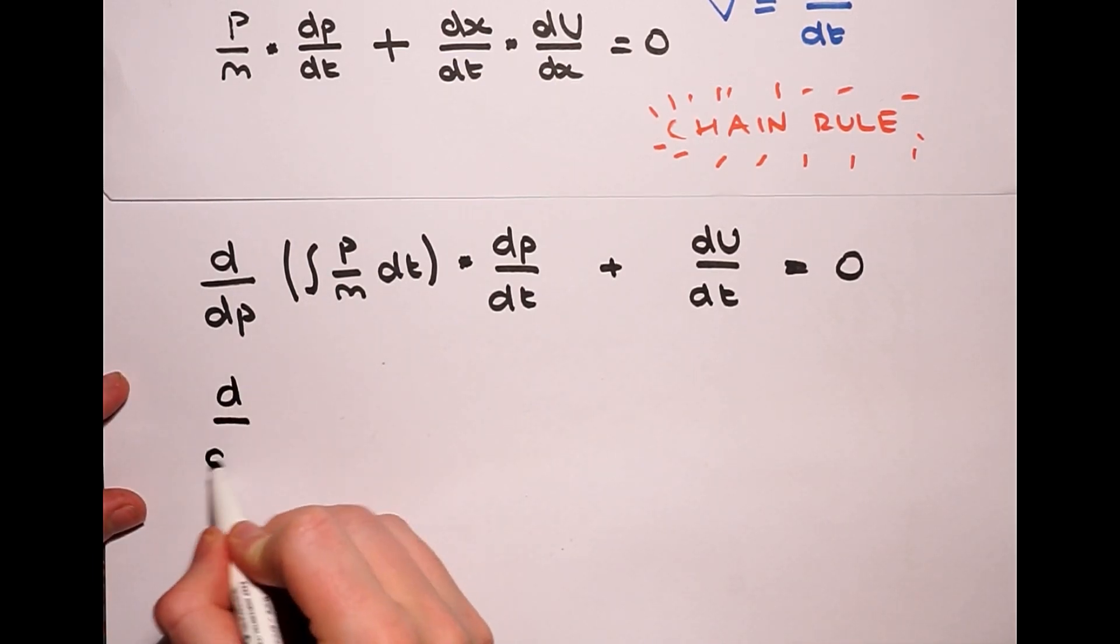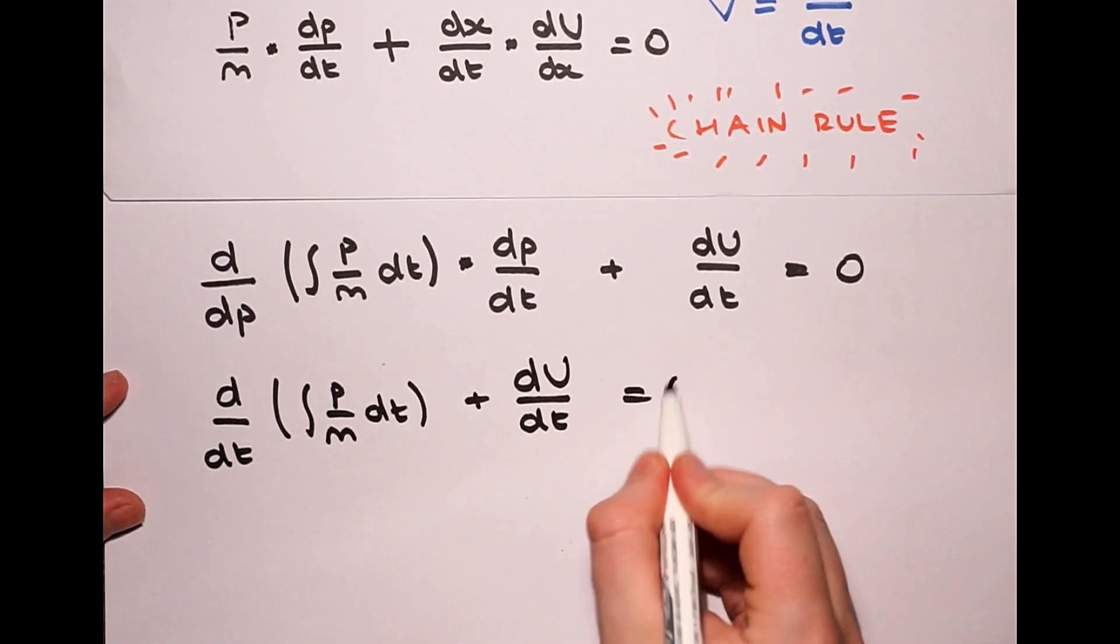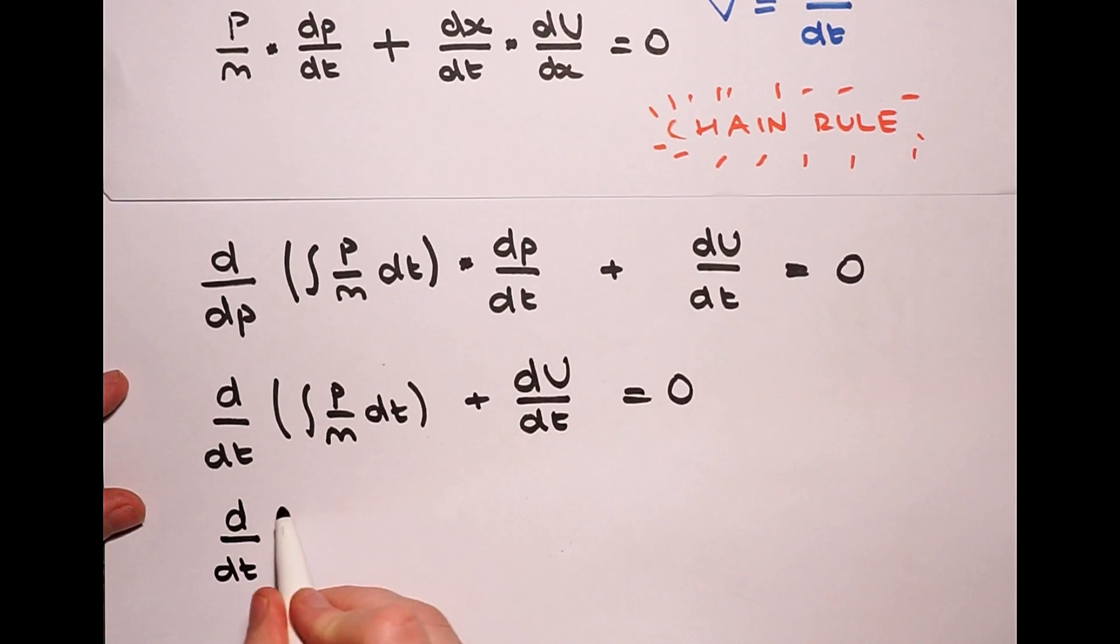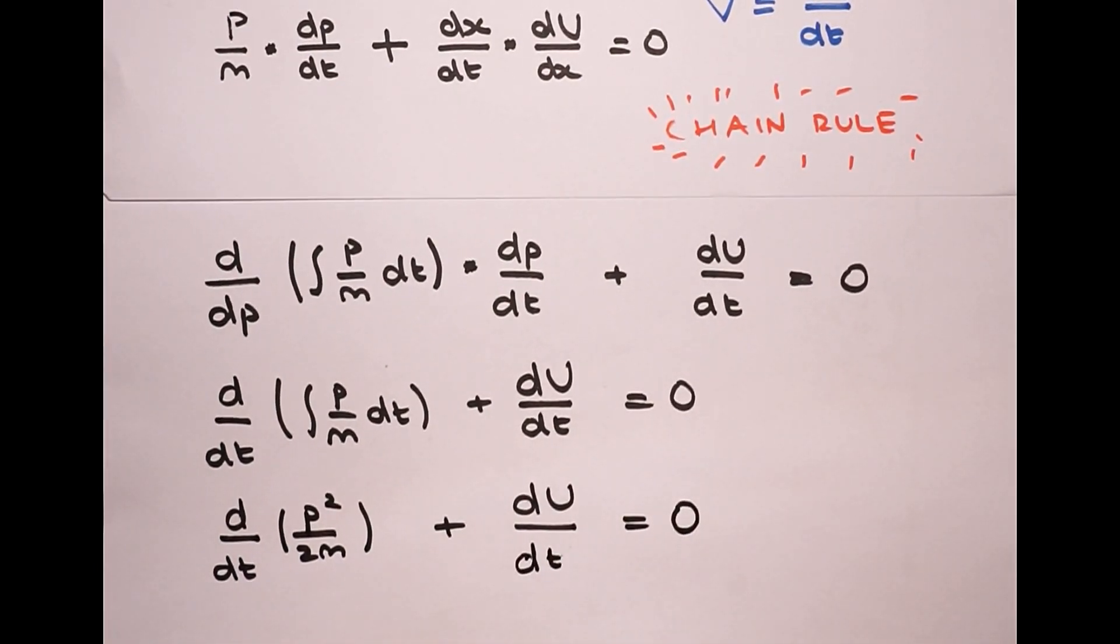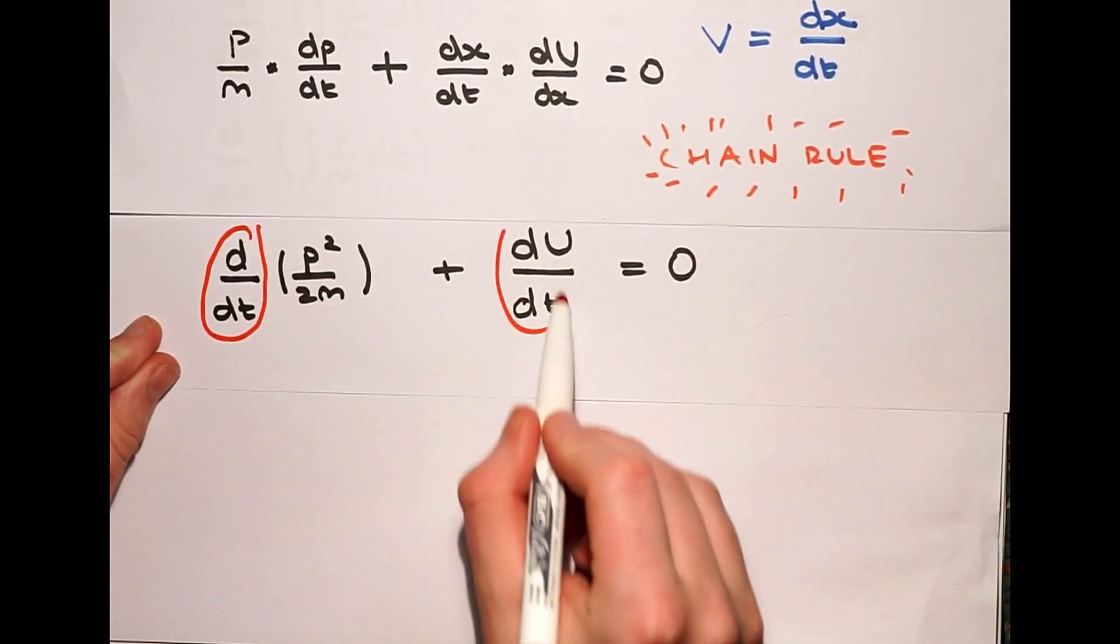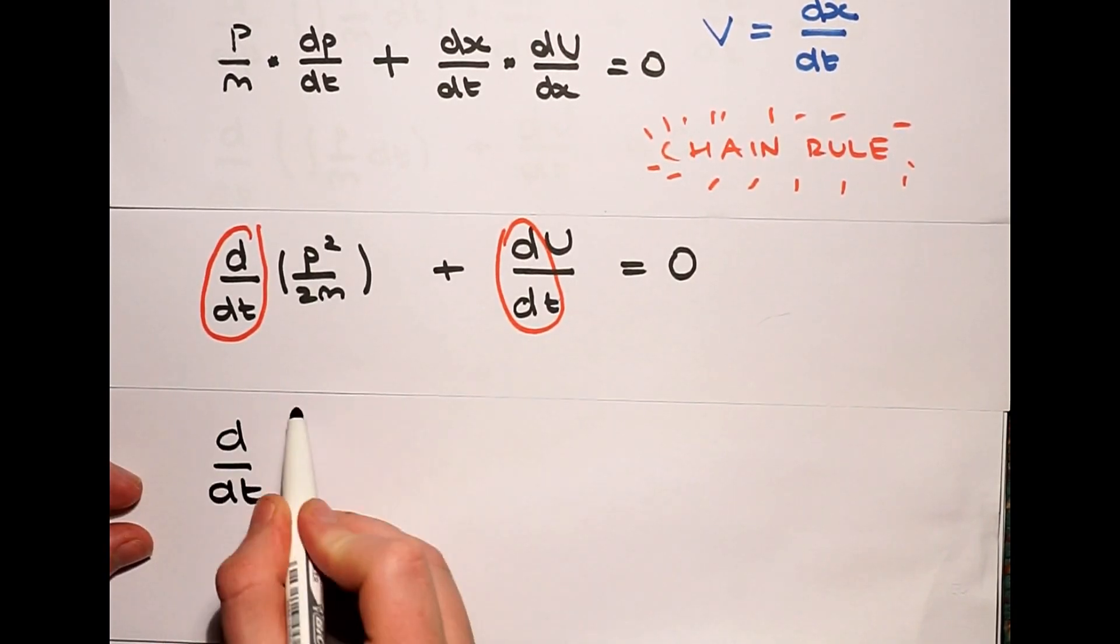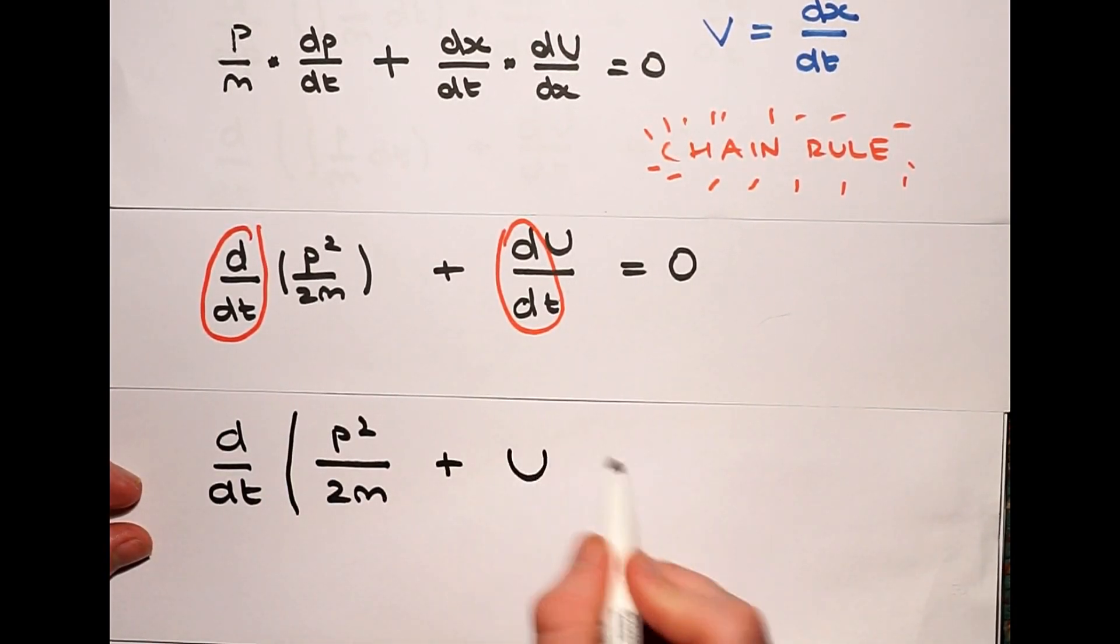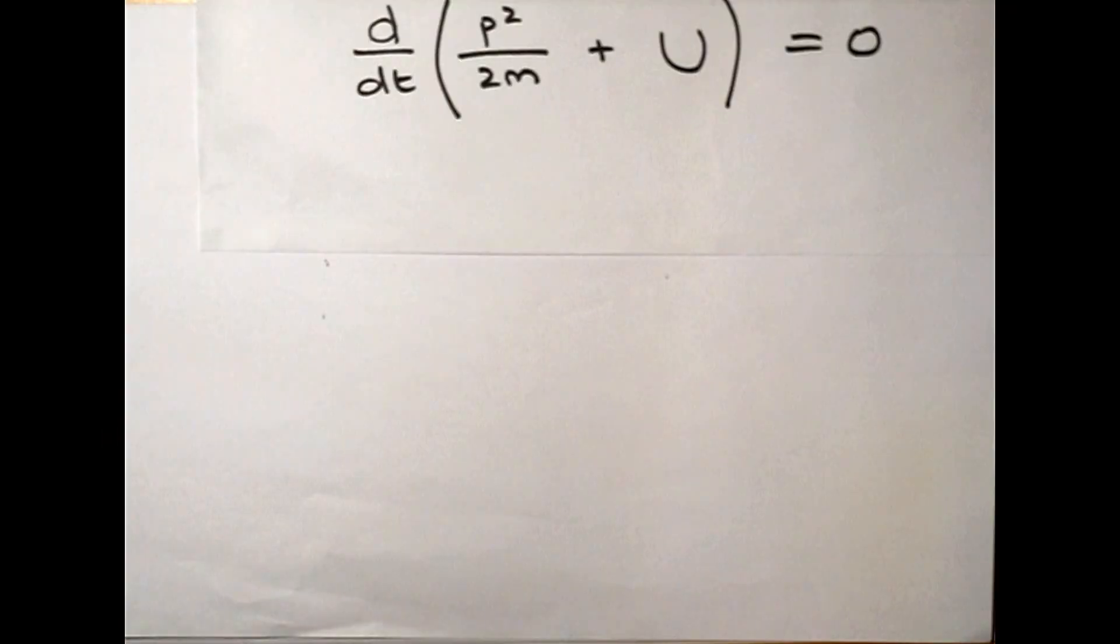Then we use the chain rule on the first term, and then integrate p over m to p squared over 2m. With this equation, we can see that both terms are derivatives with respect to time. So we can write that the derivative with respect to time of p squared over 2m plus U is equal to zero.